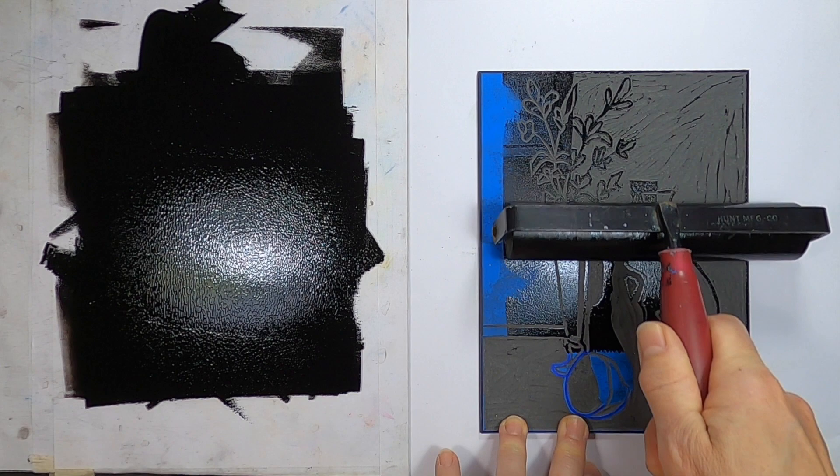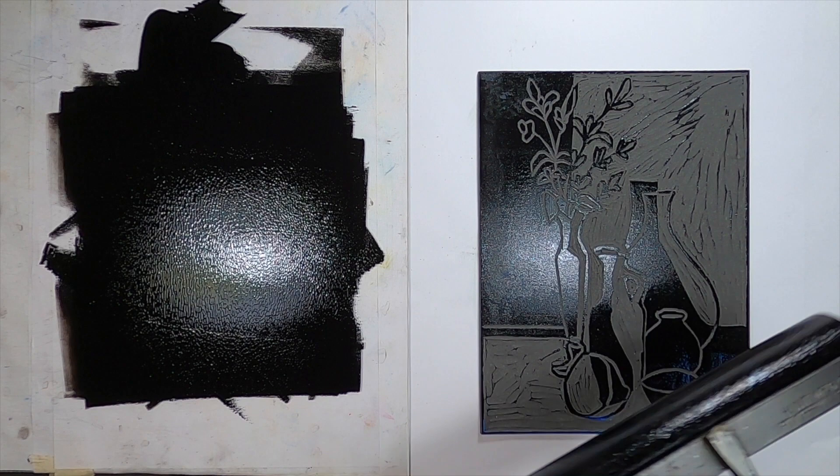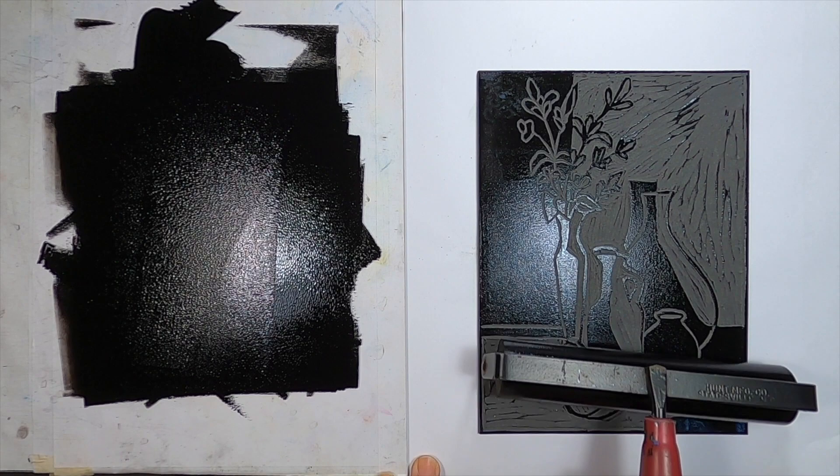Then roll over the plate. You want to make sure that all of the raised areas, in this case the blue bits, are covered in ink. You can see how that border around the edge helps to stop the roller from falling too far into the cut-out background area, and pick up too many of the cut lines.